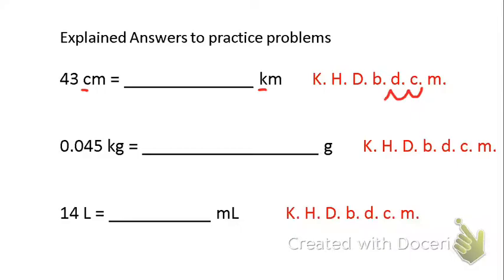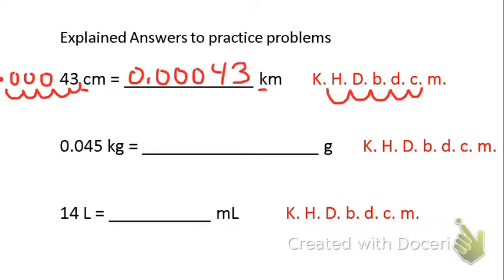We're going to jump 1, 2, 3, 4, 5. So we have to do the same thing with 43. So 1, 2, 3, 4, 5. Drop in the decimal point. Put zeros in all the valleys. So we should have 0.00043 kilometers.